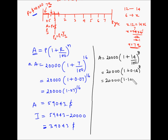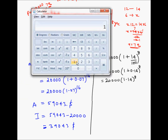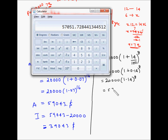Calculating: 1.14 to the power 8 multiplied by 20,000 gives $57,051. So the interest with annual compounding is 57,051 − 20,000 = $37,051 — lower than the semi-annual result of $39,043.